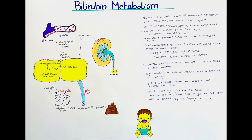Since conjugated bilirubin is more water-soluble, it can travel via the bile through the biliary tract. The bile and bilirubin travel together down to the intestines. In the large intestine, the conjugated bilirubin is worked on by bacteria and reduced by bacterial enzymes to something called urobilinogen.